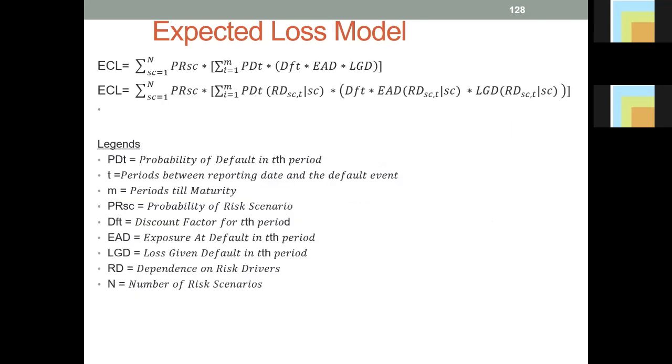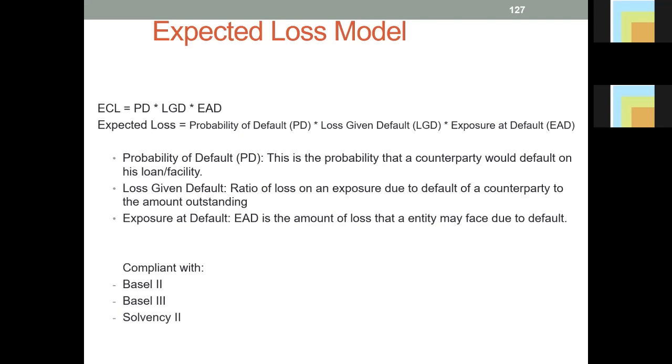The one we are only accounting for is just the expected credit loss. So let's drill down into the major things here, which is the probability of default, the loss given default, and the exposure at default. In summary, probability of default is basically saying what is the probability that an obligor will not fulfill his obligation.